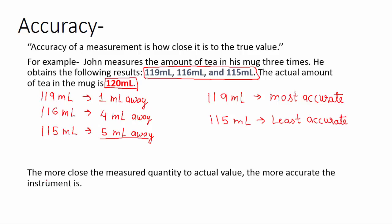So any value which is closer to the actual value means the instrument measuring it is more accurate.